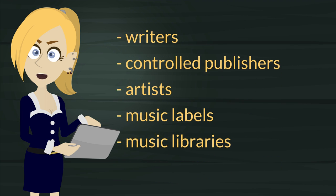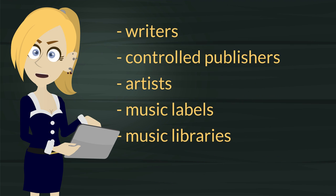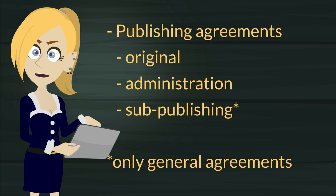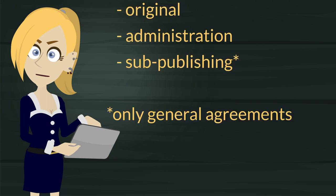This includes data about writers, controlled publishers, performing artists, labels, libraries, original publishing agreements, and depending on the tier, administration and sub-publishing agreements.